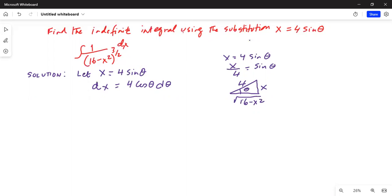So then cosine of theta is equal to the adjacent side, square root of 16 minus x square, divided by 4. If I multiply both sides by 4, I get 4 cosine theta is equal to square root of 16 minus x square.